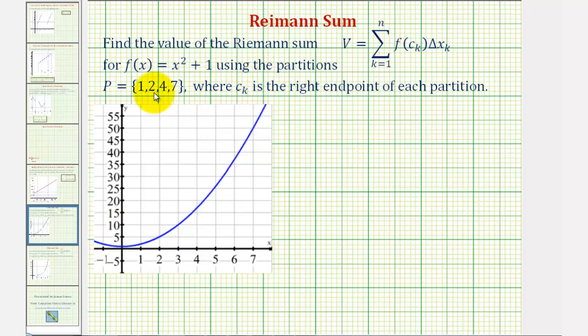Let's begin by forming our partitions using 1, 2, 4, and 7. Here's x equals 1, here's x equals 2, here's x equals 4, and here's x equals 7.